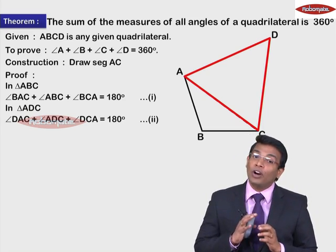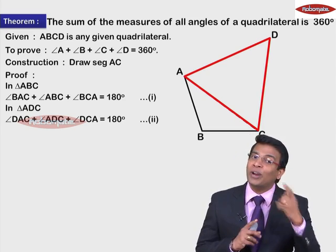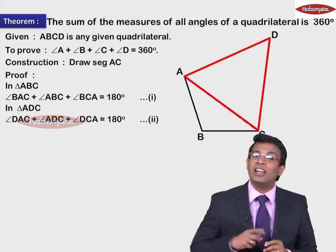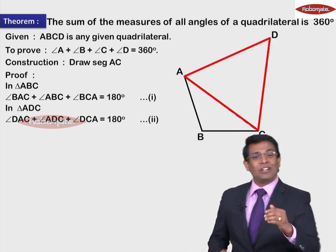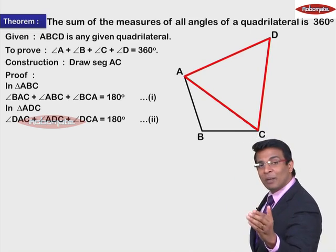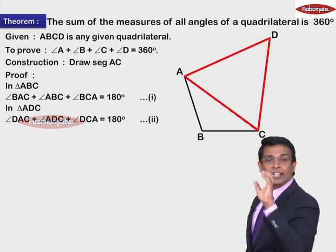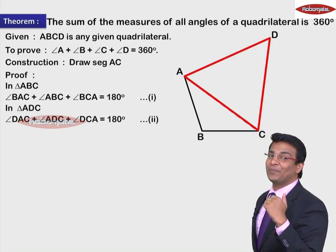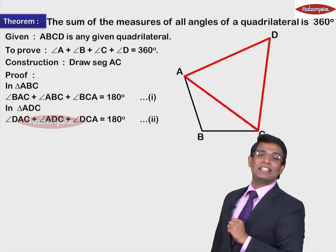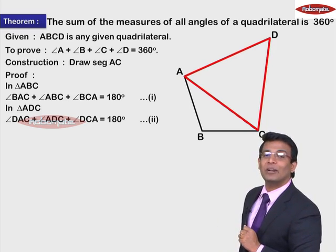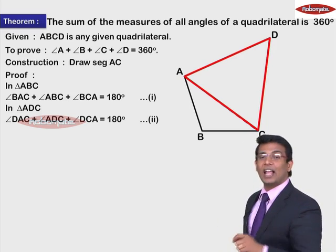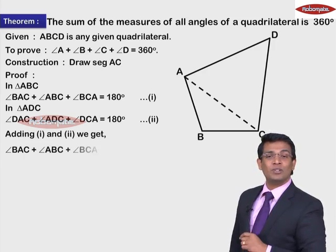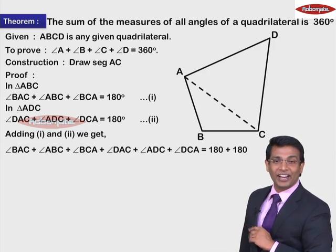Now what we want is 180 + 180 to get 360. That means the right-hand sides of Statement 1 and Statement 2 have to be added. So the next step is: adding Statement 1 and Statement 2. Adding the left-hand sides and right-hand sides, we get: angle BAC + angle ABC + angle BCA + angle DAC + angle ADC + angle DCA = 180 + 180 = 360 degrees.